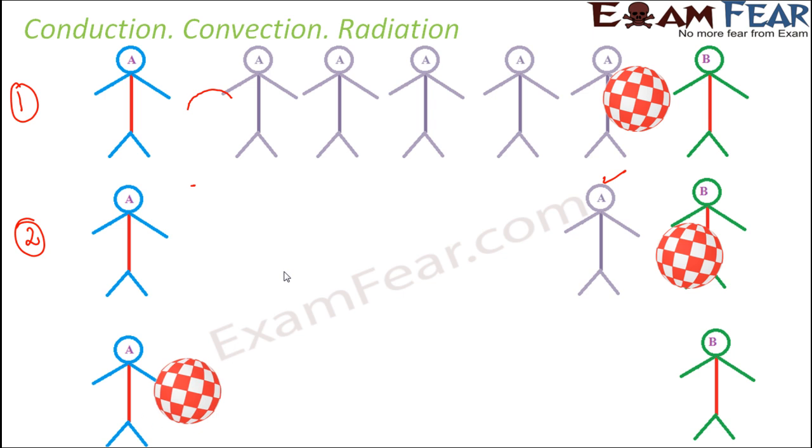And the third mode of doing this is, ask nobody's help. You just throw the ball from here and the ball reaches B. So that is the third way of transferring it.